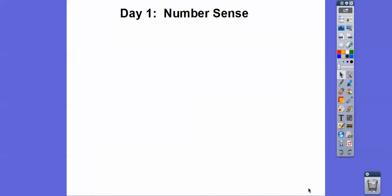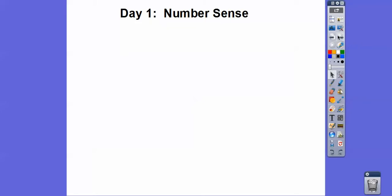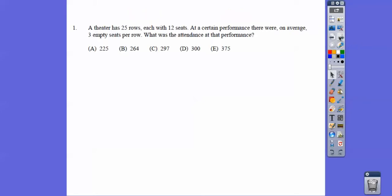Hey folks, this lesson is on Number Sense. It's our first day of our ELM test. So let's go ahead and get started here. A theater has 25 rows, each with 12 seats. At a certain performance, there were on average three empty seats.